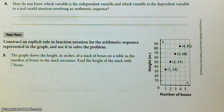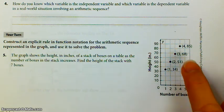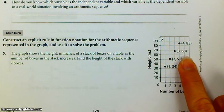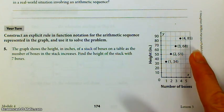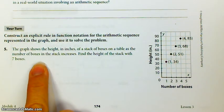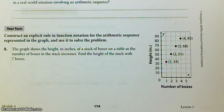We're going to go down to your turn. Construct an explicit rule in function notation for the arithmetic sequence represented in the graph and use it to solve the problem. So they've just given you a graph this time. So we're going to have to take the information from the graph. The first thing I'm going to do is construct a table, and then I'm going to figure out common difference, although I can probably eyeball it from the graph. And then we're going to find the height of the stack with 7 boxes.